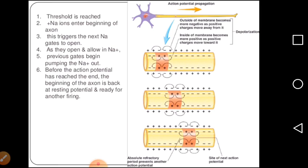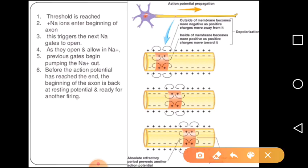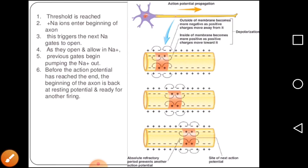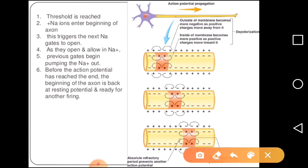Now we come to action potential propagation. First, a threshold is reached, then sodium ions enter the beginning of the axon. This triggers the next sodium gates to open. As they open and allow sodium ions, the previous gate begins to close. Before the action potential reaches the end, the beginning of the axon is back at resting potential and ready for another firing. In these neurons, the firing is saltatory. The impulse jumps from one node of Ranvier to another node, then another — this speeds up the conduction of the impulse. This is called saltatory conduction.